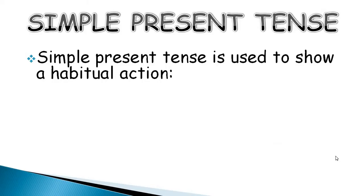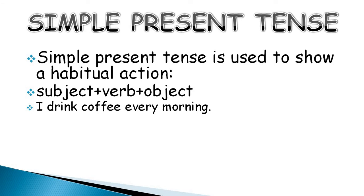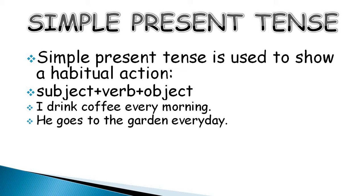Simple present tense is used to show a habitual action. The structure of this tense is subject plus verb plus object. For example: I drink coffee every morning. This drinking coffee is a habitual action because I drink it every day. He goes to the garden every day.